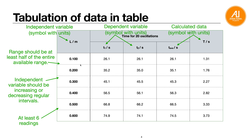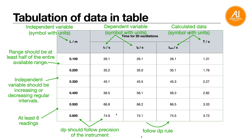Six data points are needed to plot the best-fit line. The decimal places in the table should follow the precision of the instrument — so if you're measuring in meters, the meter rule gives 3 DP. The stopwatch may give 1 DP or 2 DP depending on the instrument. For averages calculated by addition, follow the DP rule — if both T1 and T2 are 1 DP, the average is also 1 DP. For division such as T-average divided by 20 oscillations, follow the SF rule, giving 3 SF.